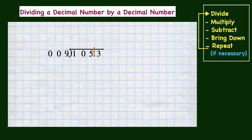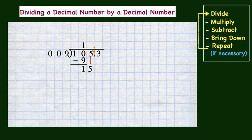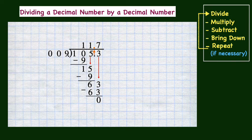Now we can start the division process. 9 does not divide into 1, so moving on to the next digit, we have the number 10. And 9 divides into 10 one time. Multiplying 1 times 9 is 9, and then subtracting 9 from 10, we have a remainder of 1. We need to bring down the next digit of 5 from the dividend and repeat the process again. 9 divides into 15 one time. 15 minus 9 is 6, and we're ready to bring down the next digit. Now we have the number 63, and 9 divides into 63 exactly 7 times. Now that we have a zero remainder with no digits left in the dividend to bring down, we are done.